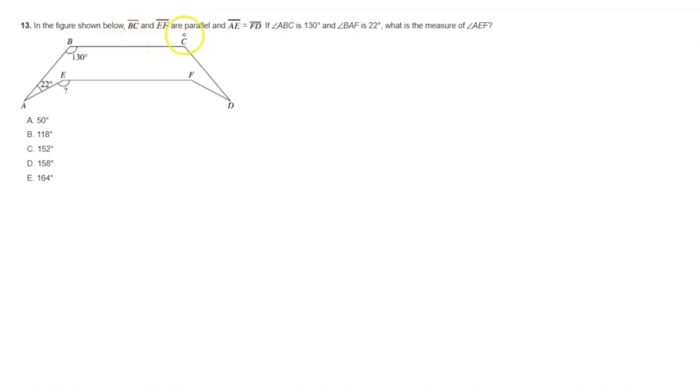In the figure below, BC and EF are parallel and AE is congruent to FD. If angle ABC is 130 degrees and angle BAF is 22 degrees, what is the measure of angle AEF? So this angle right here that we're trying to find. What we're going to do is draw a line, a straight line from A to D. So imagine that's a straight line. So why did I just do that? Because we know from E to F that is parallel with BC. So from drawing a point from A to D, we also just created another parallel line.